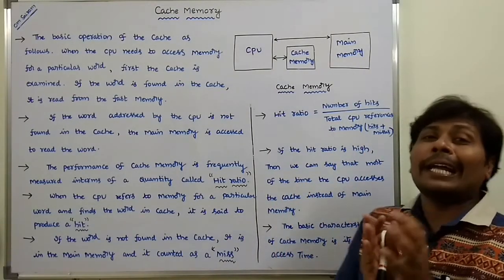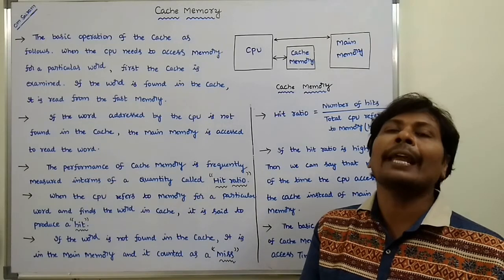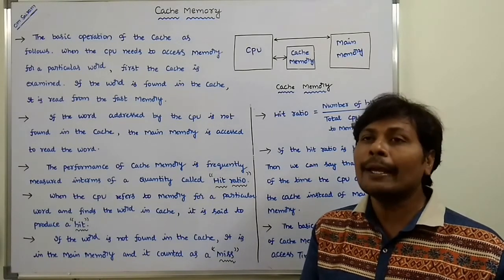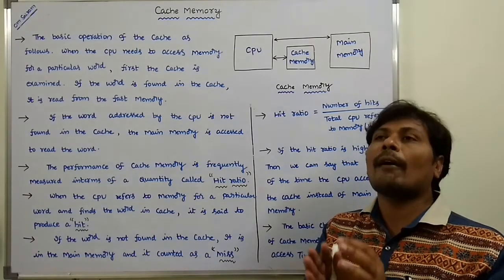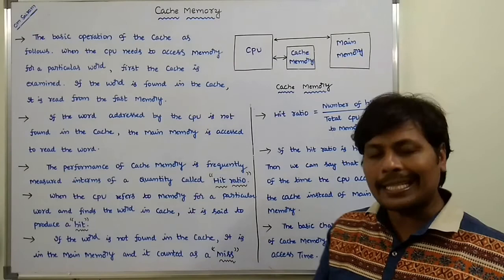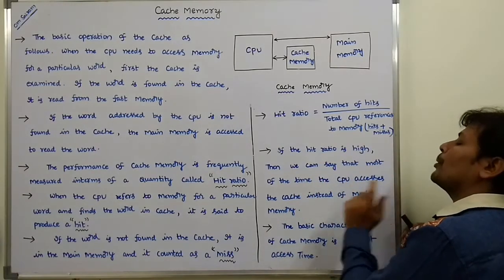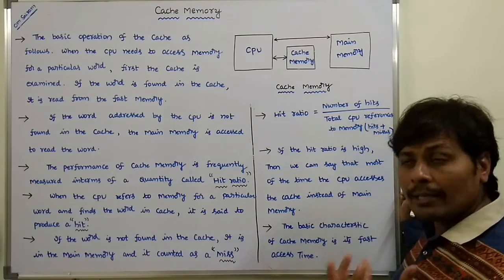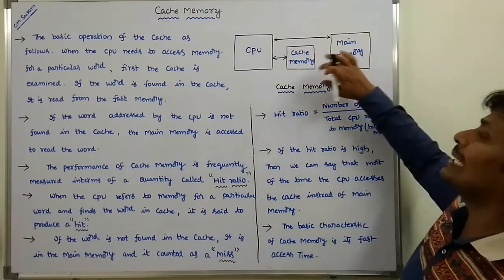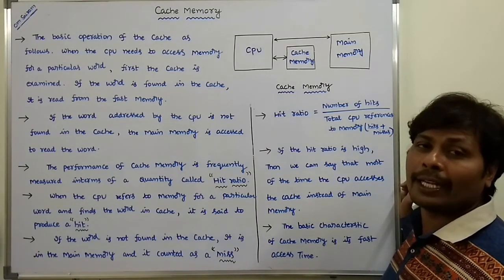If the hit ratio is very high, that means when the CPU wants to access memory for a particular word, the word is almost always present in the cache. If the hit ratio is high, we can say that most of the time the CPU accesses the cache instead of main memory, because most of the time the requested word is found in cache memory instead of requiring access to main memory.